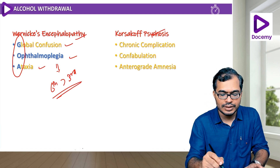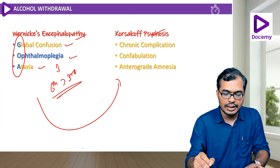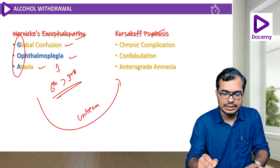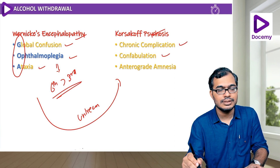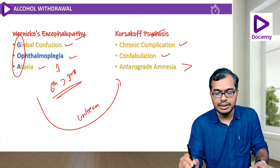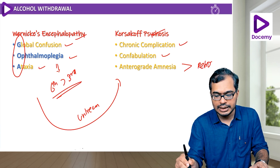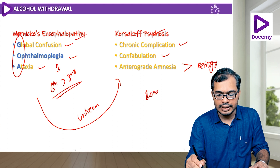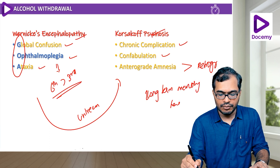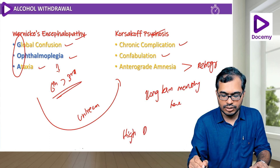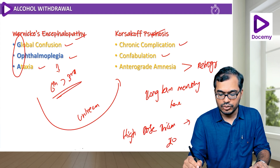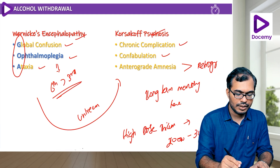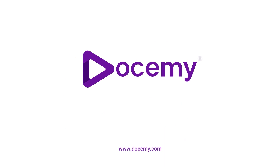When Wernicke's is untreated, it culminates into Korsakoff's psychosis, which is a chronic complication. The patient will have confabulation and anterograde amnesia more than retrograde amnesia. Long-term memory is intact. The treatment for both is high-dose thiamine — 200 to 300 milligrams of thiamine.